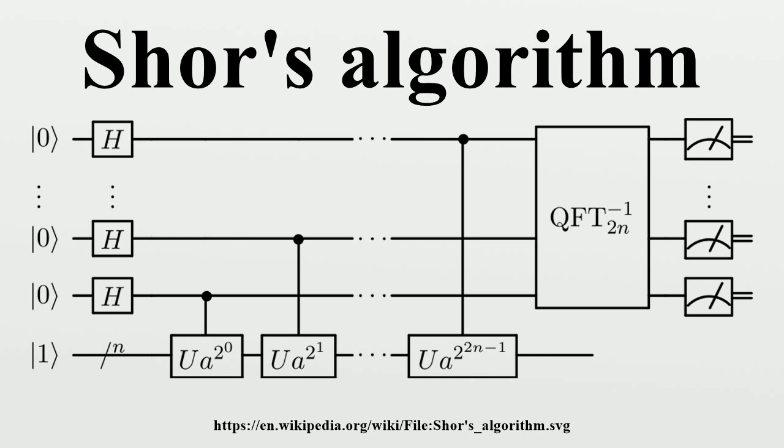Explanation of the algorithm: The algorithm is composed of two parts. The second part finds the period using the quantum Fourier transform and is responsible for the quantum speedup. Obtaining factors from period: the integers less than n and coprime with n form a finite abelian group under multiplication modulo n.